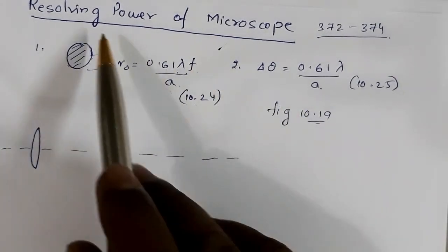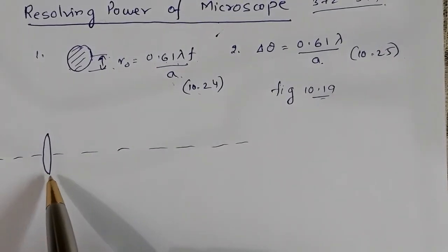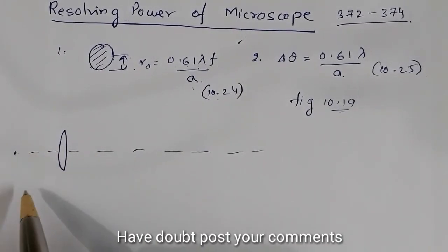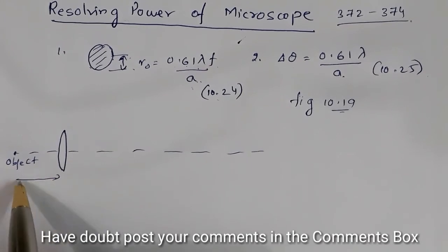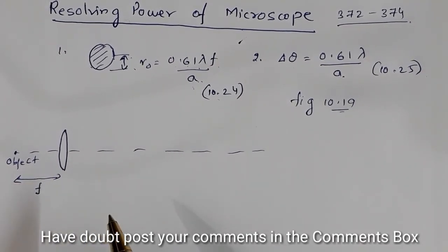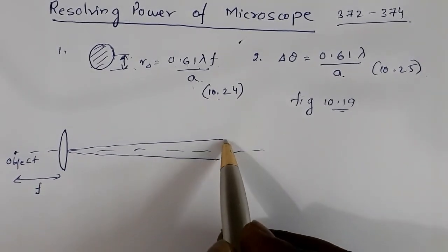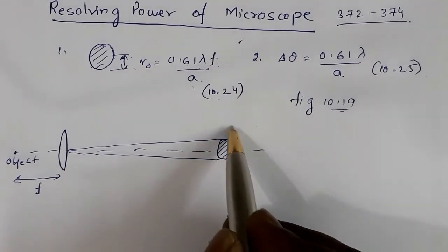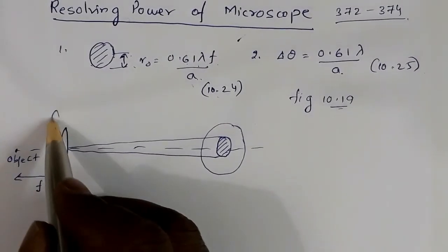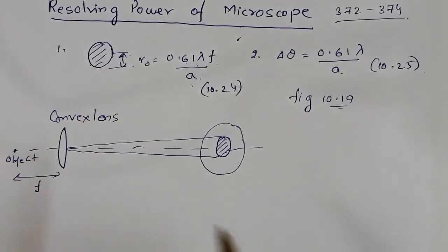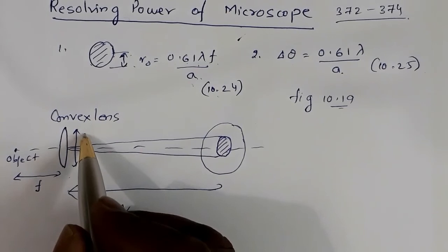In a microscope you have an objective, and the object is placed slightly beyond the focal length of the objective. The image is formed in the image plane. The distance from the lens to the image is v, let D be the aperture of the convex lens, and let this angle be theta.